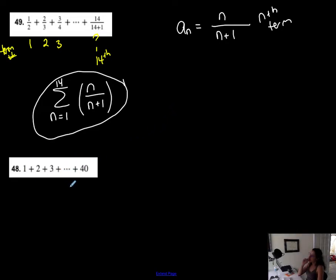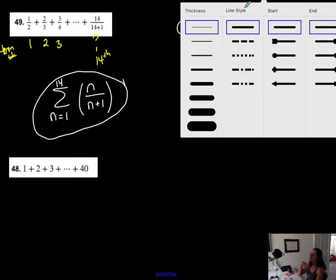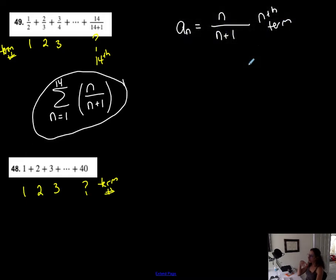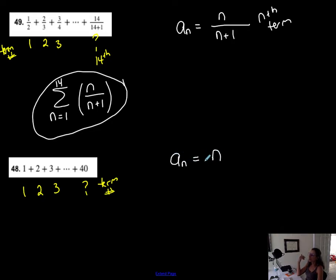Let's talk about this next example. I like to write the term number next to the actual term: term one, term two, term three, and an unknown last term. I notice that the term number matches the actual term value directly, so the explicit form is simply a_n = n. Double-checking: for the first term, a_1 gives 1 — correct. This means the last term is the 40th term.